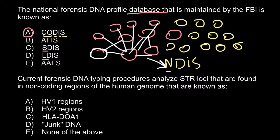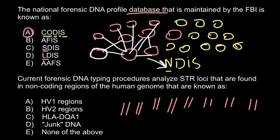Next question: current forensic DNA typing procedures analyze STR loci that are found in non-coding regions of the human genome, known as — and here are five answers to choose from. Before showing the correct answer, here is some theory. We have 23 pairs of chromosomes, and on 13 of them scientists have found regions that have higher variation in short tandem repeats.